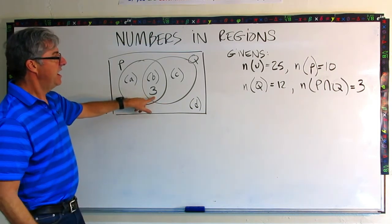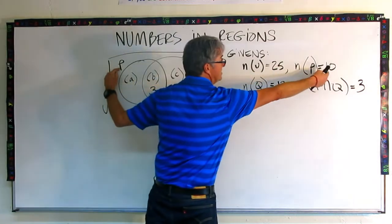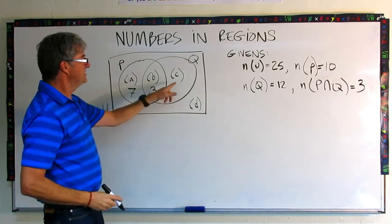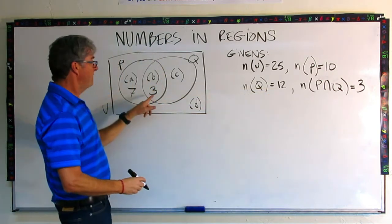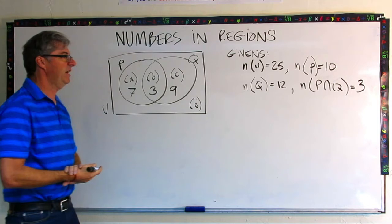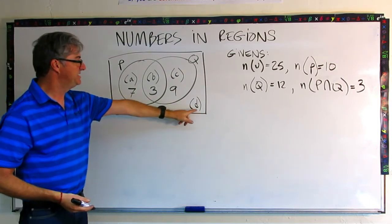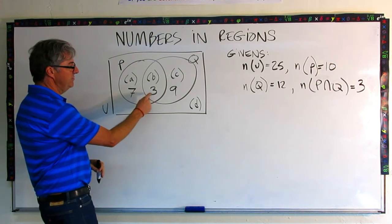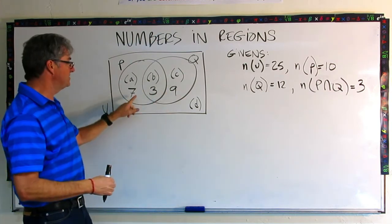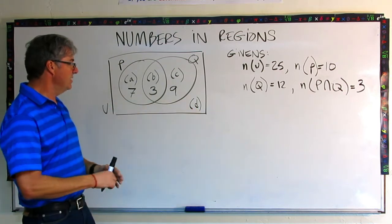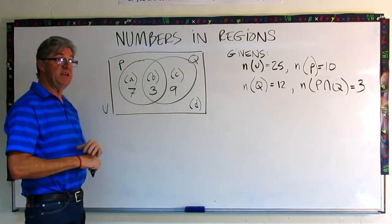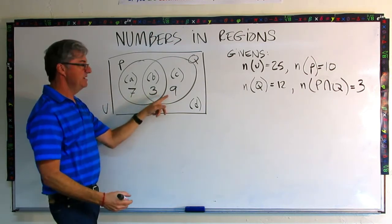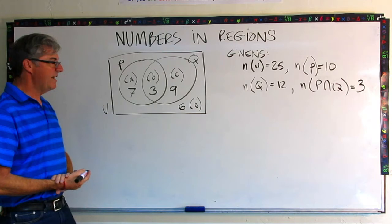Now that we know the intersection is 3, and P totals 10, that means the other part of P must be 7. For Q, the total is 12 and 3 are in the intersection, so the other part of Q must be 9. Now we can find D — the outside region — because the total must be 25. We have 7, 3, and 9 already accounted for: 25 minus 7 minus 3 minus 9. That's 25 minus 10 is 15, minus 9 is 6. So D equals 6, and now we have all four regions.